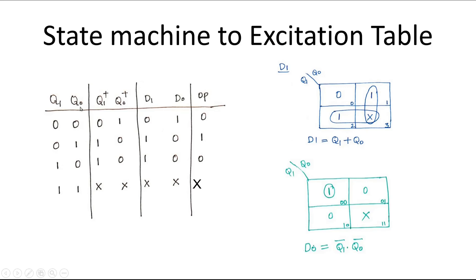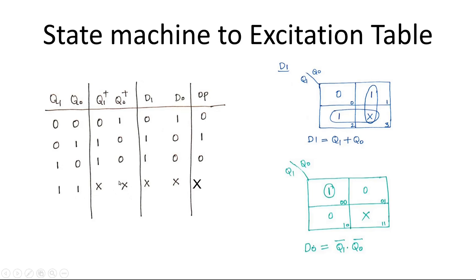Our design has two flip-flops with outputs Q1 and Q0, where Q1 is the MSB and Q0 is the LSB. The possible values are 00, 01, 10, and 11 — where 00 represents S0, 01 represents S1, 10 represents S2, and 11 is a possible flip-flop combination that will never actually occur but must be considered. Q1 and Q0 form the current state, and Q1+ and Q0+ are the next states. The next state of S0 (00) is S1 (01); the next state of S1 (01) is S2 (10); S2 (10) stays at 10; and the next state of 11 is XX (don't care).